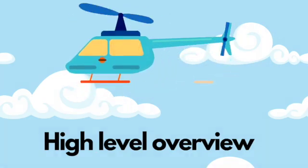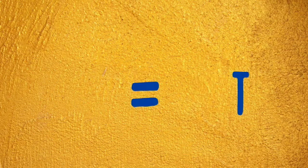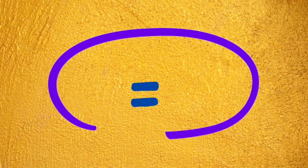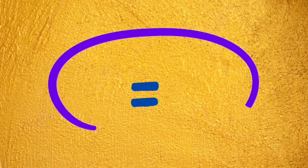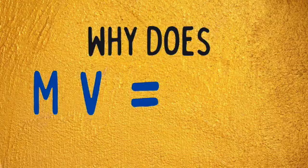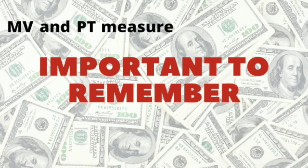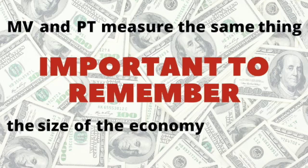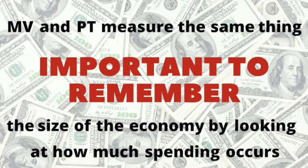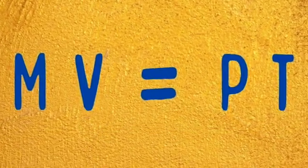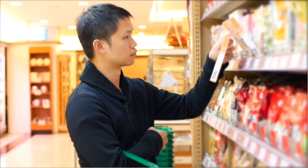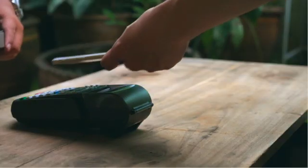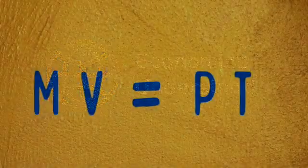Let's start with a very high-level overview. Rather than immediately defining M, V, P, and T, let's focus on the equal sign between them — this is often overlooked. MV and PT measure the same thing, just in different ways: they both measure the size of the economy by looking at how much spending occurs over a set period, usually a year. So if both sides measure the quantity of spending in an economy, it must follow that MV equals PT.